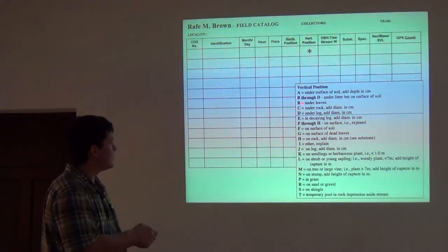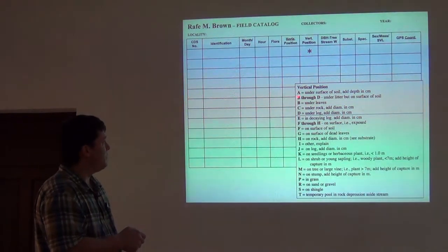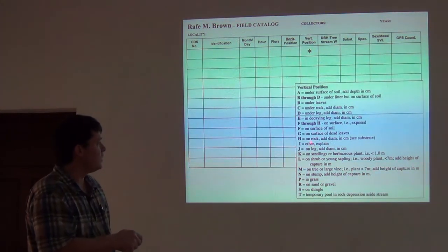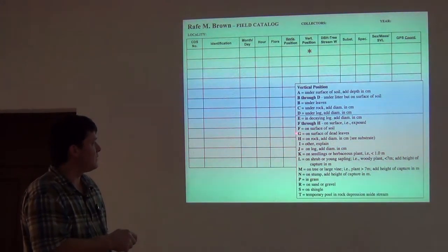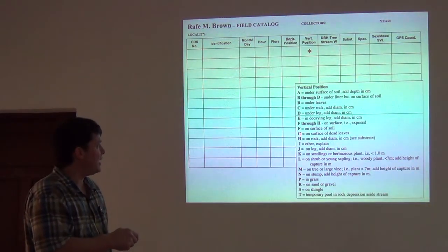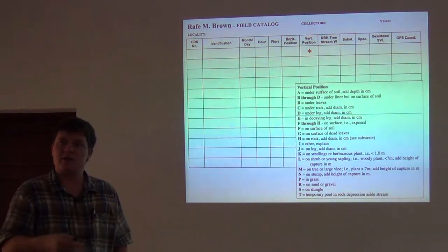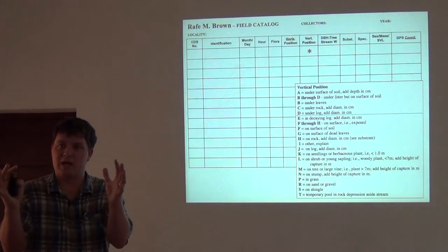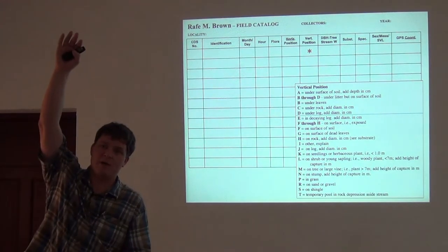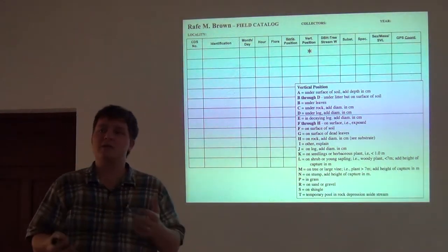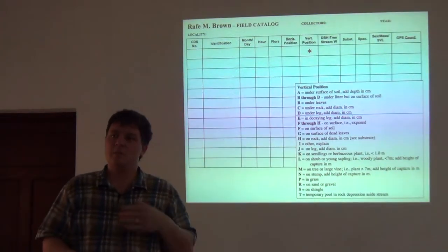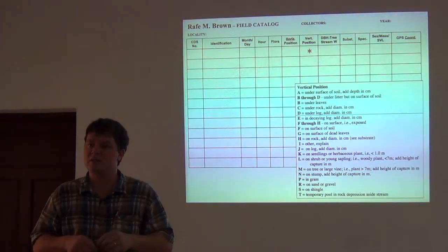Vertical position is also complex and there are lots of categories. B through D corresponds to — you can just look at these for yourself — all the different ways. On the surface of soil. We use something like H a lot because amphibians are often collected on rocks on the banks of rivers. So I'd write H, 30 centimeters, telling us I collected this on a bank rock that was 30 centimeters in diameter, or a big boulder that was two meters high. You just estimate these distances — the idea is not to have you out there with a measuring tape, but just to give you a sense of the size.